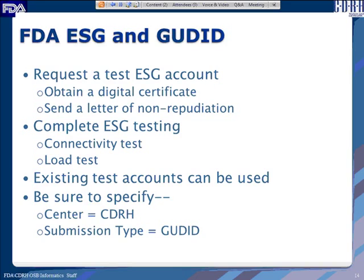Once ESG testing is complete, you can begin testing for GoodID. Be sure to specify the center as CDRH and the submission type as GoodID so that the gateway routes it to the correct center and CDRH can route it to the appropriate parser.